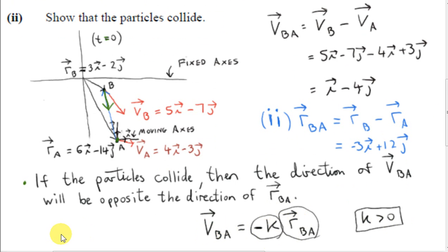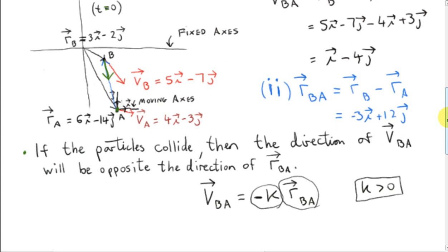Now I didn't have to write it like this. I could have written RBA has to be a negative scalar, call it C, multiple of vector VBA. So either way will do, it doesn't matter. If one vector points in the opposite direction of the other vector, then the second vector points in the opposite direction of the first vector, of course. It doesn't matter. So let's see if this is true.